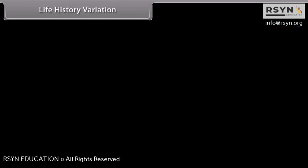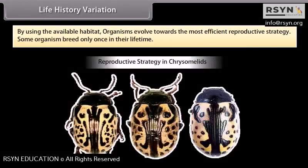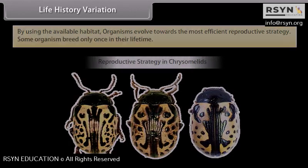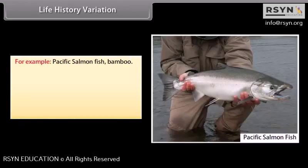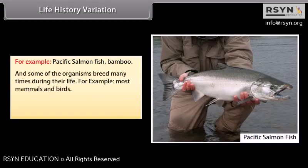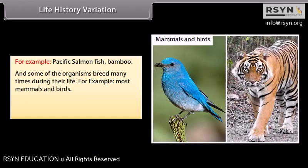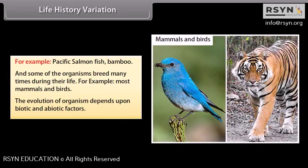In life history variation, organisms evolve towards the most efficient reproductive strategy using available habitat. Some organisms breed only once in their lifetime, such as Pacific salmon fish and bamboo. Others breed many times during their life, such as most mammals and birds. The evolution of an organism depends upon both biotic and abiotic factors.